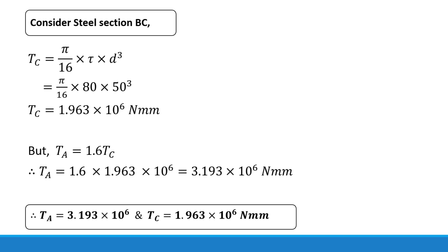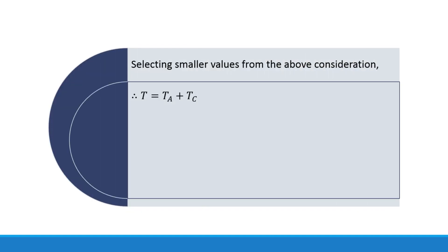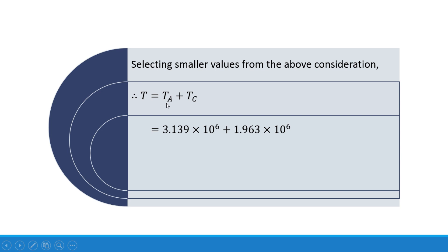We have calculated Ta and Tc by considering both the bronze and steel sections separately. The safe values are the smaller ones. The smaller value of Ta is 3.139 × 10⁶ N·mm and the smaller value of Tc is 1.963 × 10⁶ N·mm.